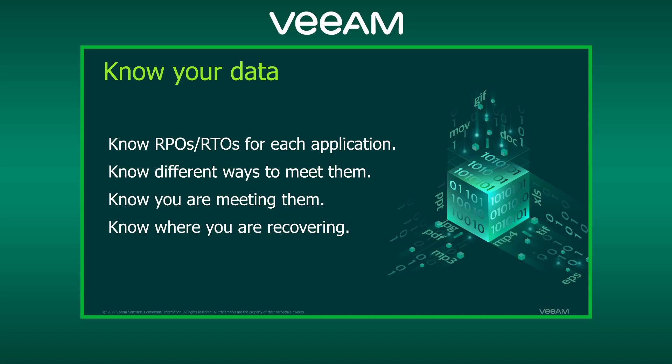There are a lot of different ways to meet those RPOs and RTOs once you figure them out. Then you need to validate them through checking and testing, making sure you're able to meet them, and know where you're recovering. If your power grid is offline and both data centers are on the same grid, you'll need a third recovery location. Knowing all the different recovery options up front and testing them is very important.